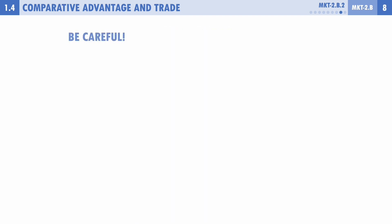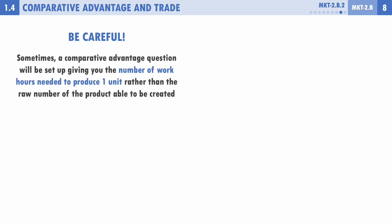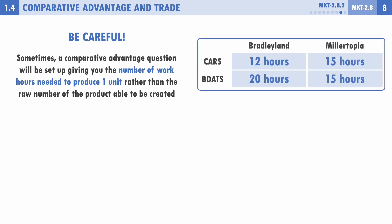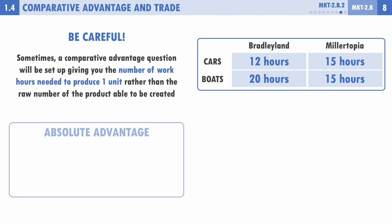One final warning: be careful when you see tables that show the number of work hours needed to produce one unit, rather than the raw number of goods that can be produced. It's easy to fall into the trap of comparing raw numbers, but with hour-based tables, absolute advantage means who can produce one unit in fewer hours — who can produce it faster.